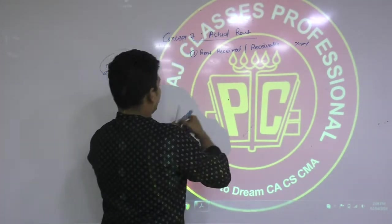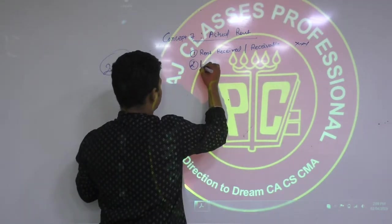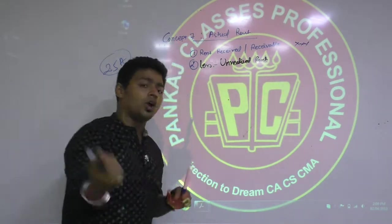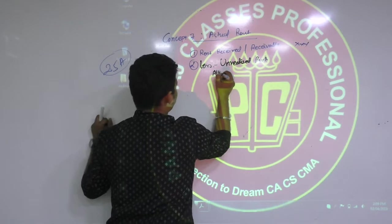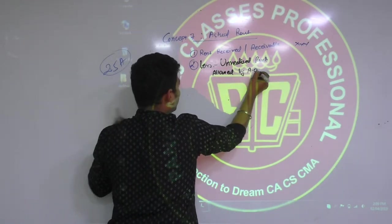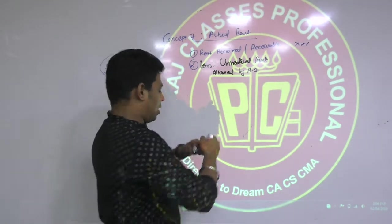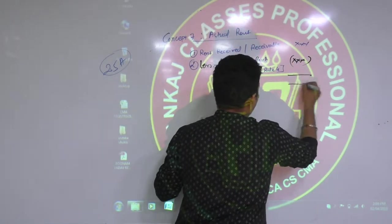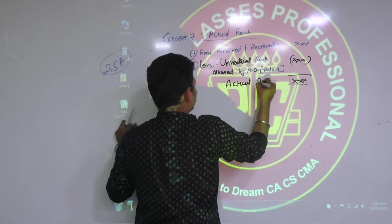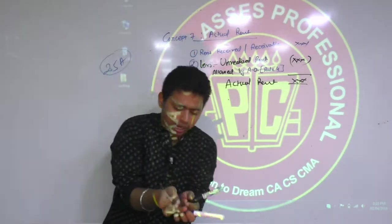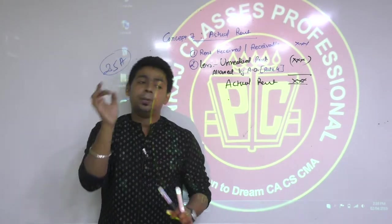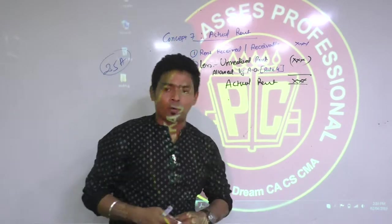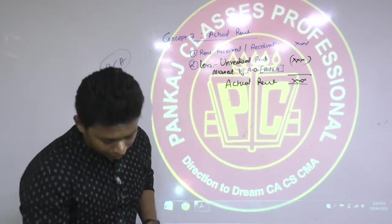Assuming AO is convinced and the whole 40,000 was allowed, you write: Less — unrealized rent allowed by AO. In the exam they will write 'Rule number 4 conditions complied,' meaning AO has accepted your claim. So the formula for actual rent is: Actual rent = Rent received plus receivable, minus unrealized rent allowed by AO as per Rule 4.